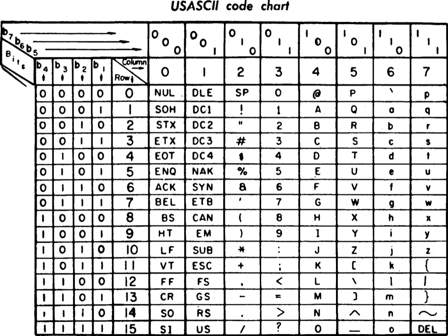There was some debate at the time whether there should be more control characters rather than the lowercase alphabet. During May 1963, the CCITT Working Party on the New Telegraph Alphabet proposed to assign lowercase characters to columns 6 and 7. An international organization for standardization TC-97 SC2 voted during October to incorporate the change into its draft standard, and the X3.2.4 task group voted its approval for the change to ASCII at its May 1963 meeting. Locating the lowercase letters in columns 6 and 7 caused the characters to differ in bit pattern from uppercase by a single bit, which simplified case-insensitive character matching and the construction of keyboards and printers.